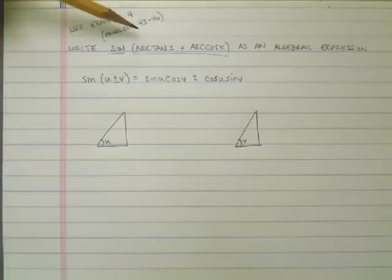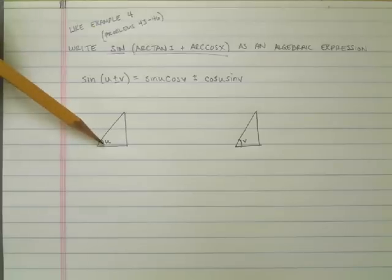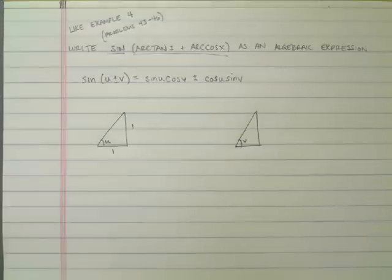Now, u is going to be related to arctan(1), and v is going to be related to arccos(x). If I draw a triangle and u is the angle, remember u stands for the angle here, I know that the tangent of that angle is 1. That means that I have 1 and 1 here.